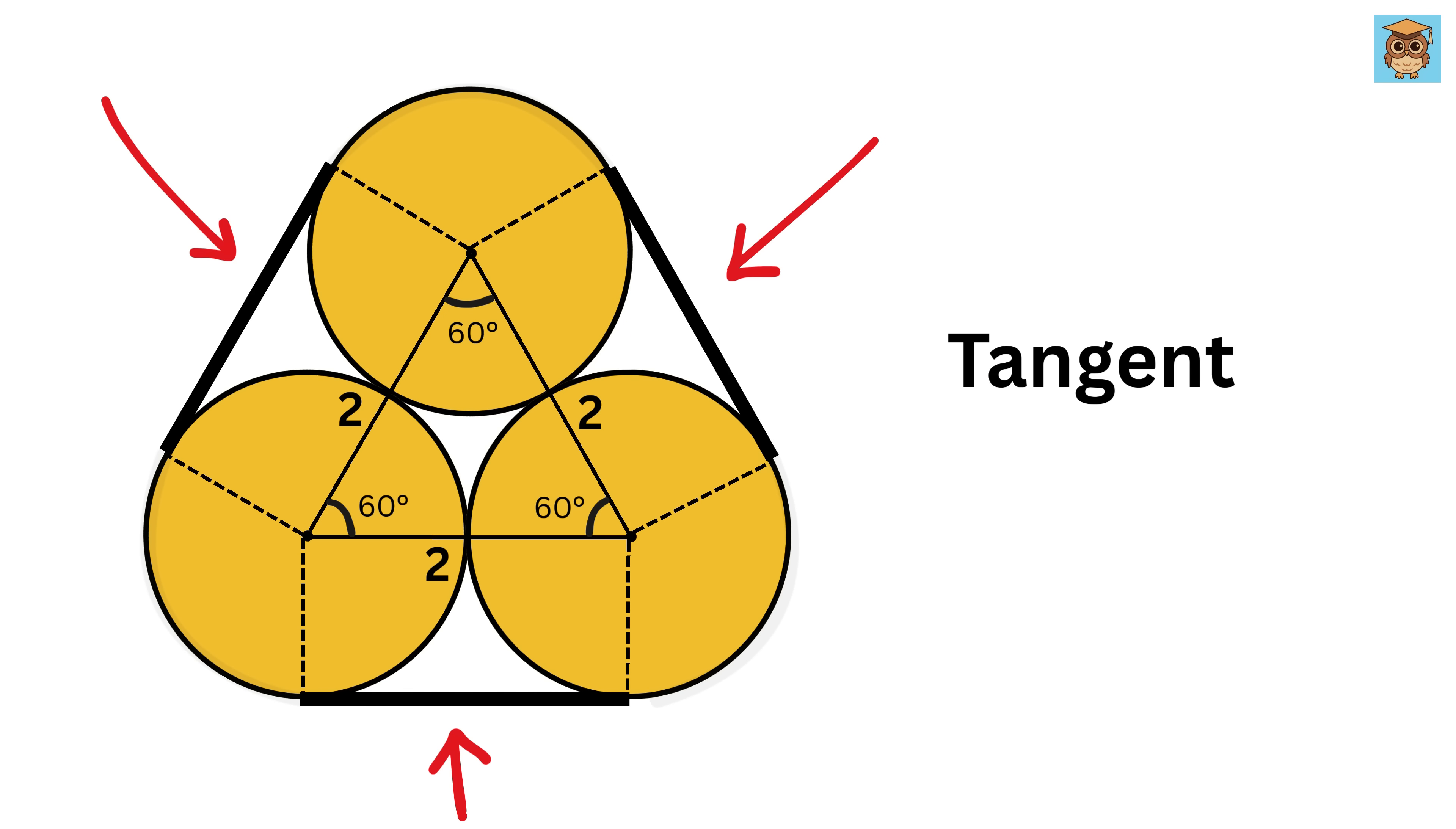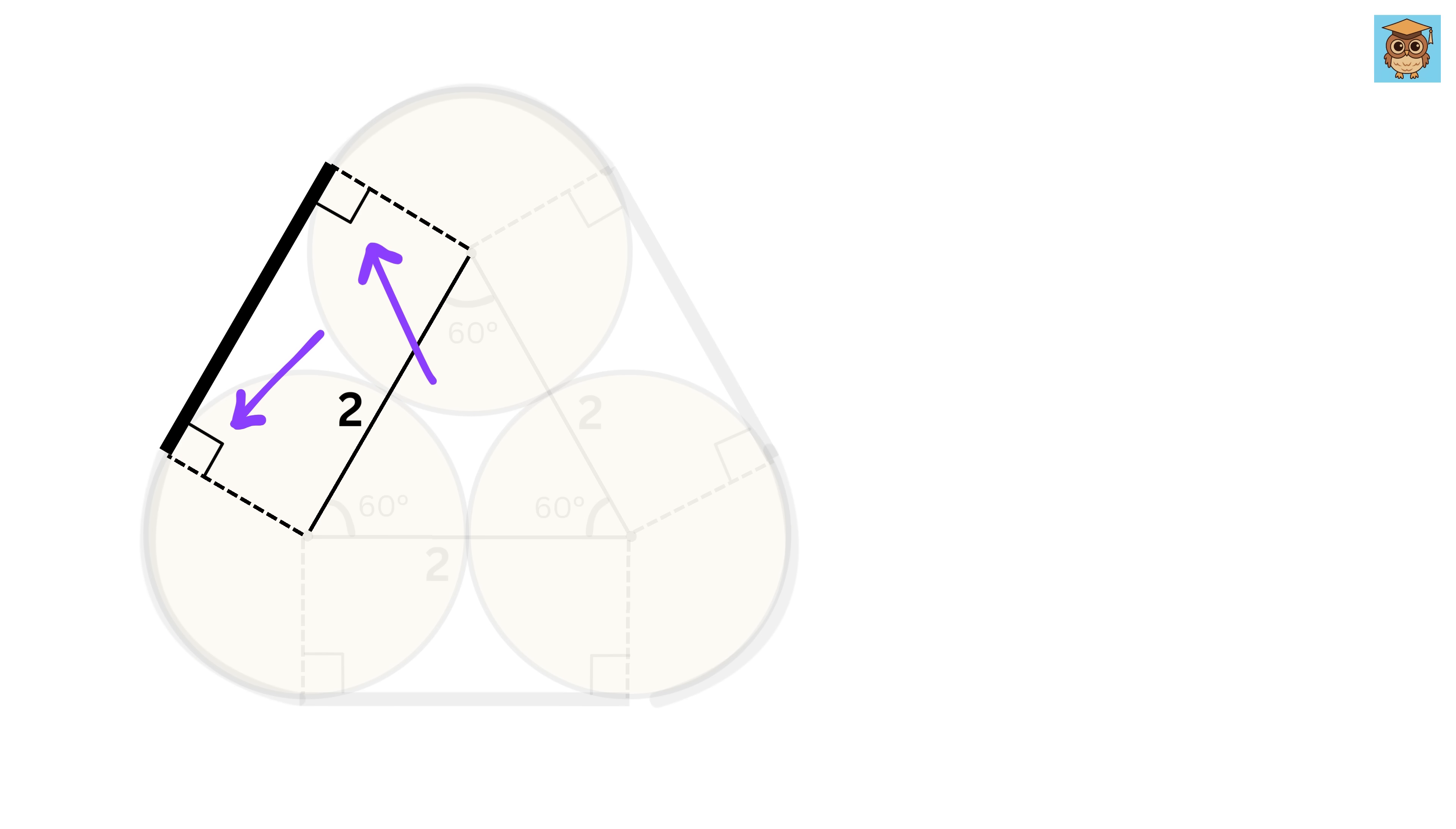Since the band just lightly touches the circle at these points, it acts like a tangent. Here's an important rule about tangents: whenever a line touches a circle like this, the line from the center to the touching point makes a right angle or 90 degrees with the tangent, or in this case the band.